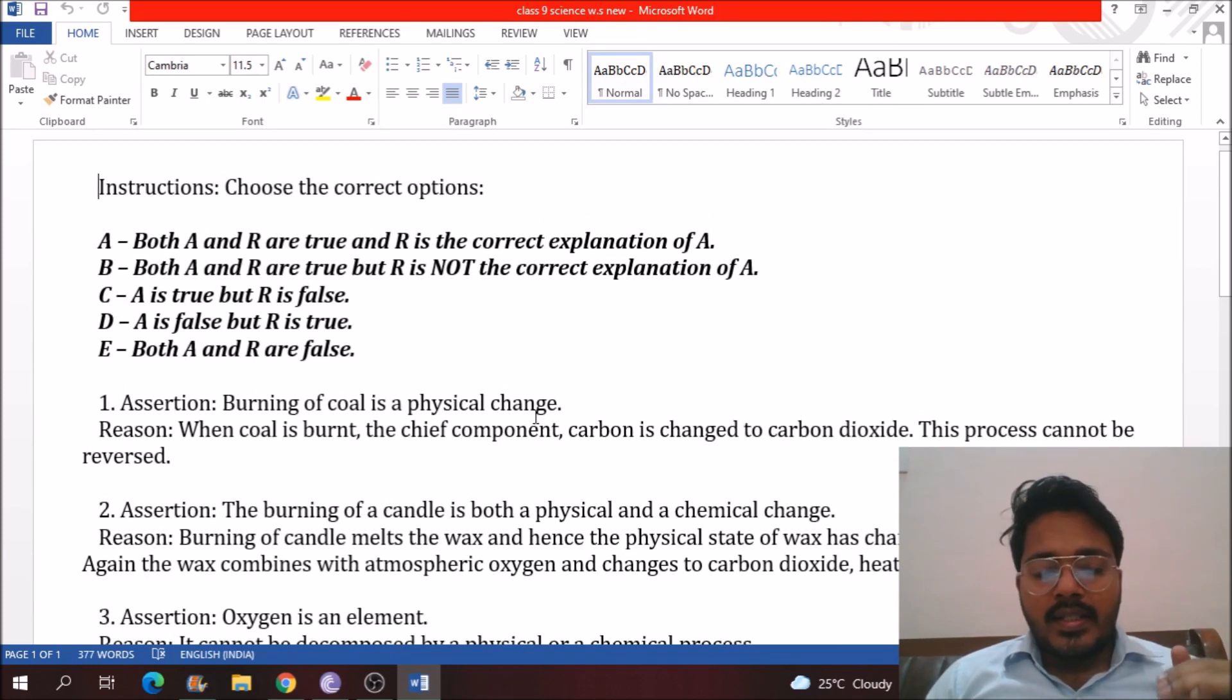You know about the 4 options A, B, C, D. Here E option is also there in which both assertion and reason are false. So without wasting time let's start.